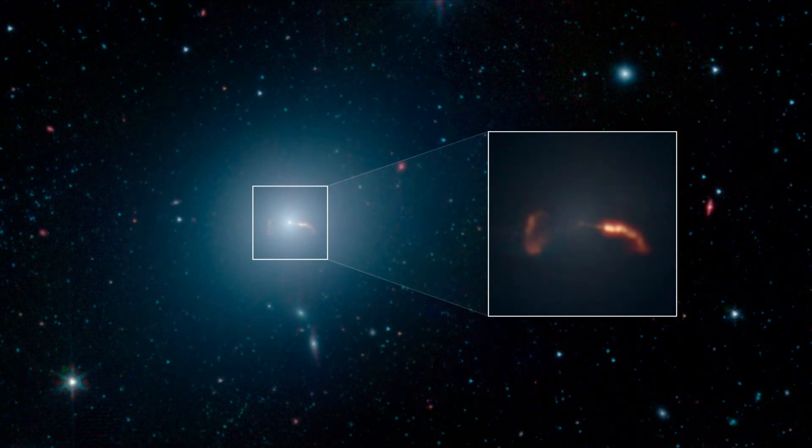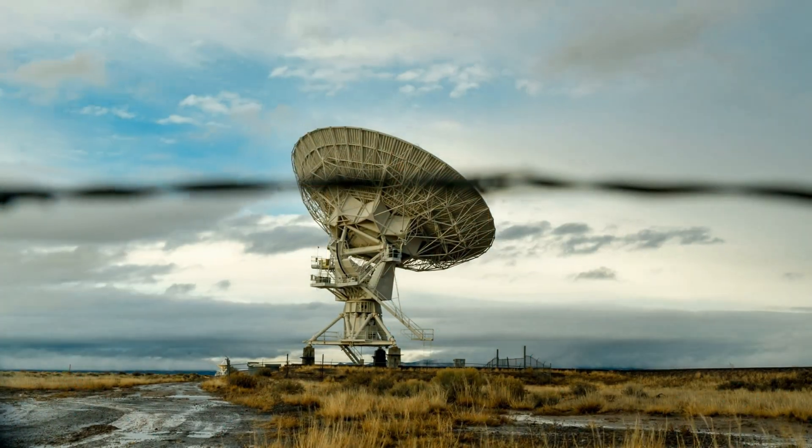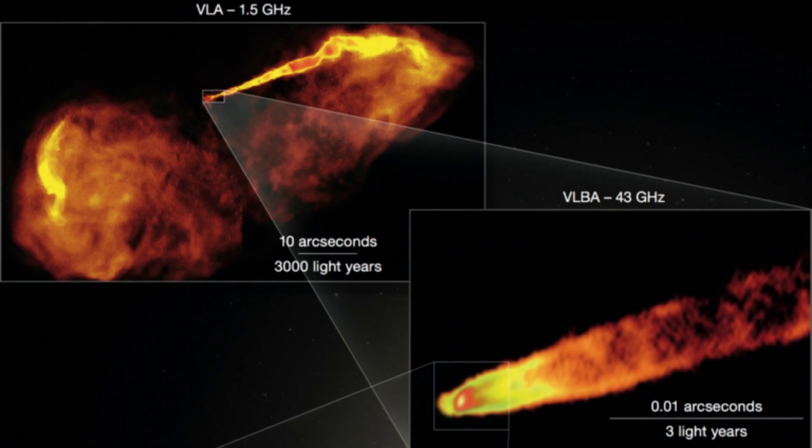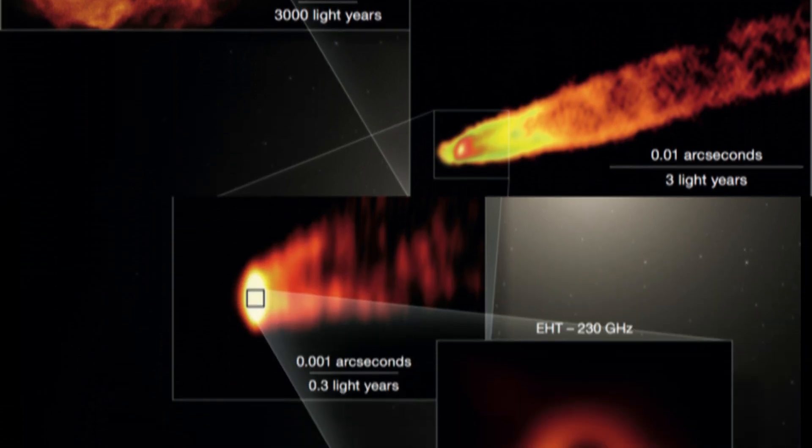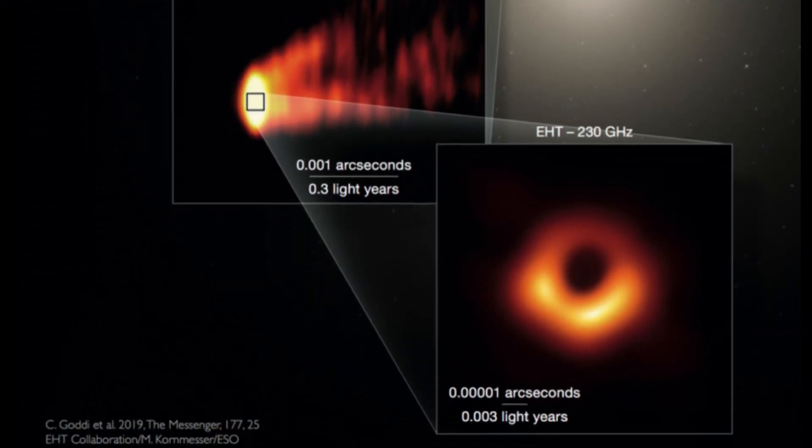By observing M87 using a global network of radio telescopes from 2000 to 2022, astronomers discovered that the black hole's jets exhibited a back-and-forth wobbling pattern, marking an 11-year cycle. This wobbling demonstrated that the black hole was indeed precessing or wobbling on its axis, much like a spinning top.